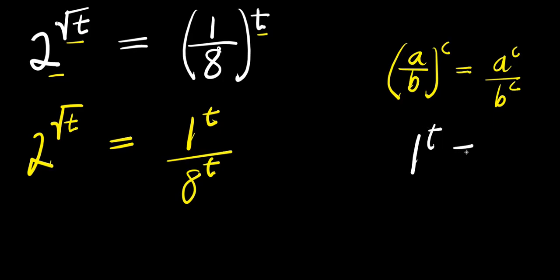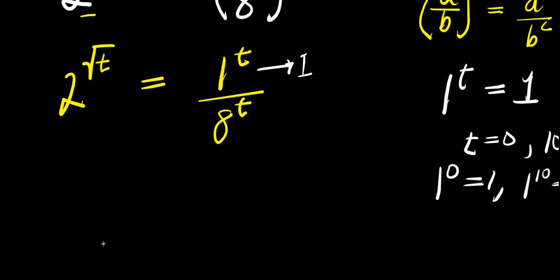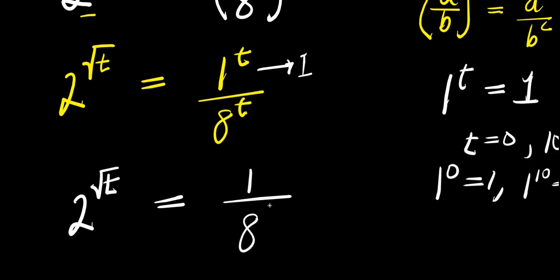You should also note that 1 raised to the power of t equals 1, irrespective of the value of t. For instance, if t equals 0, you have 1 to the power 0 which is 1. If t equals 10, you have 1 to the power 10 which is also 1. Any value, including negatives, still gives 1. That means we simply have 2 to the power square root of t equals 1 divided by 8 to the power t.